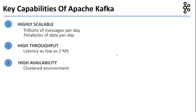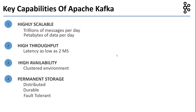Three, Kafka is highly available. Kafka clusters can be distributed across availability zones and geographical regions to make it highly available. Four, Kafka can be used for permanent storage. Kafka is distributed across clusters and servers making it highly fault tolerant. Kafka messages are durable and can be retained for a configurable amount of time.